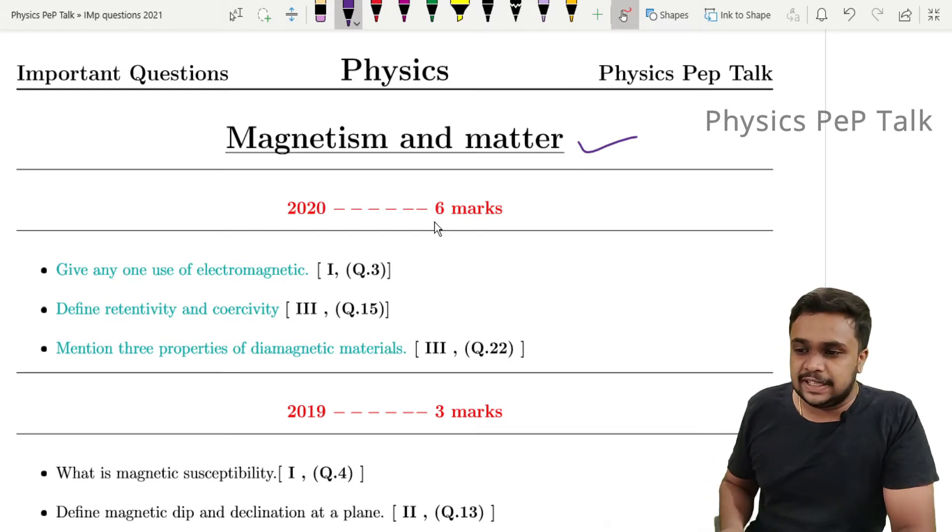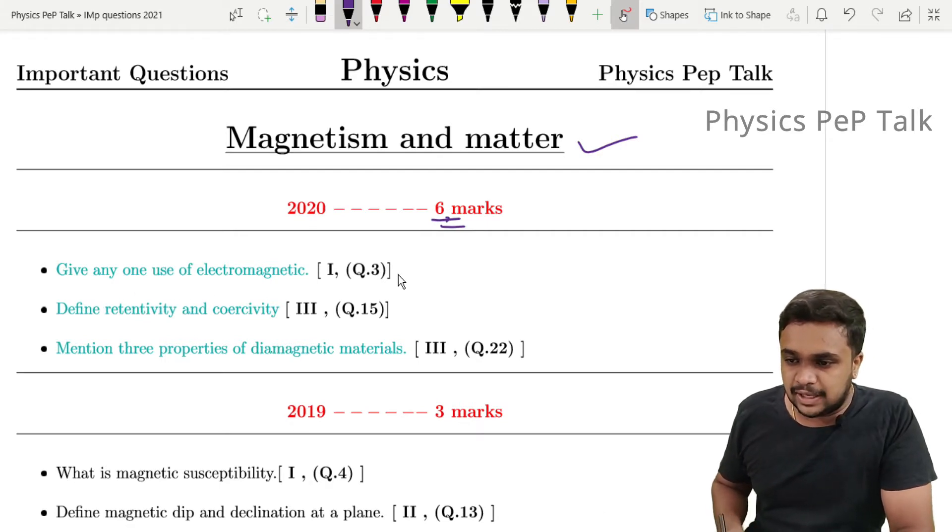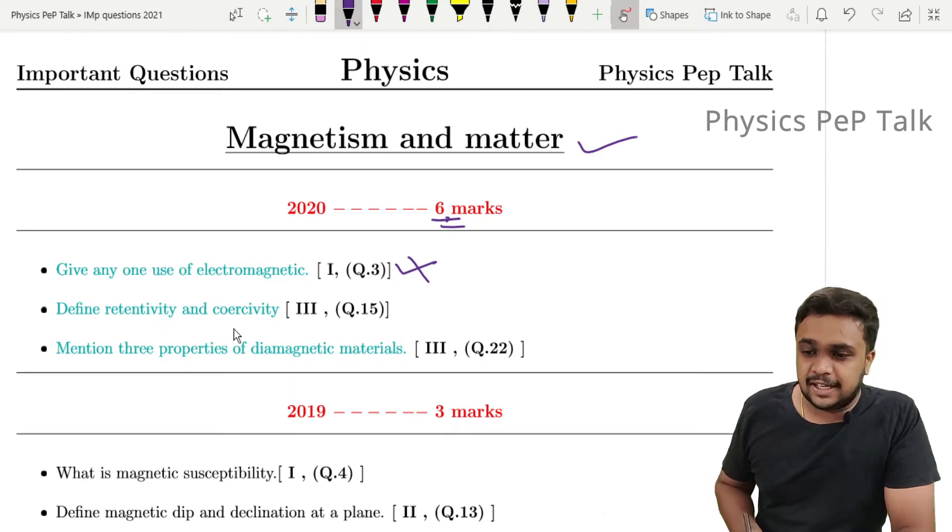In 2020, there were 6 marks from this chapter. 'Give any one use of electromagnet' - this question is not in the current syllabus. 'Define retentivity and coercivity' - this is a deleted portion of the chapter.